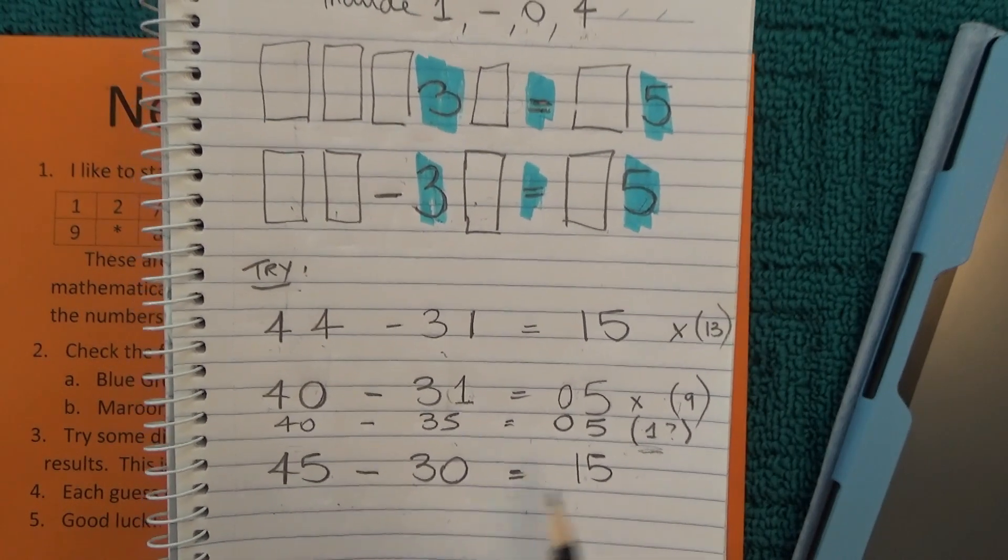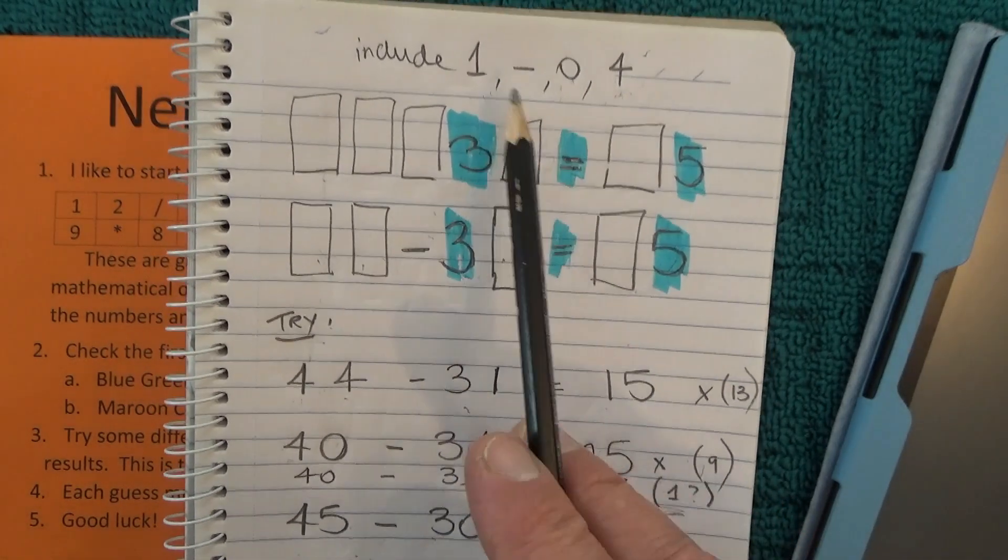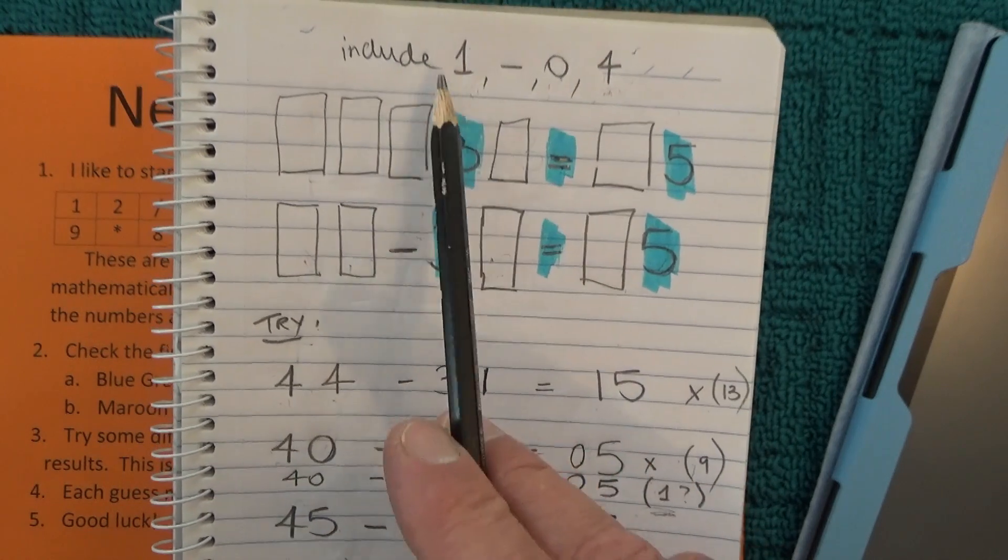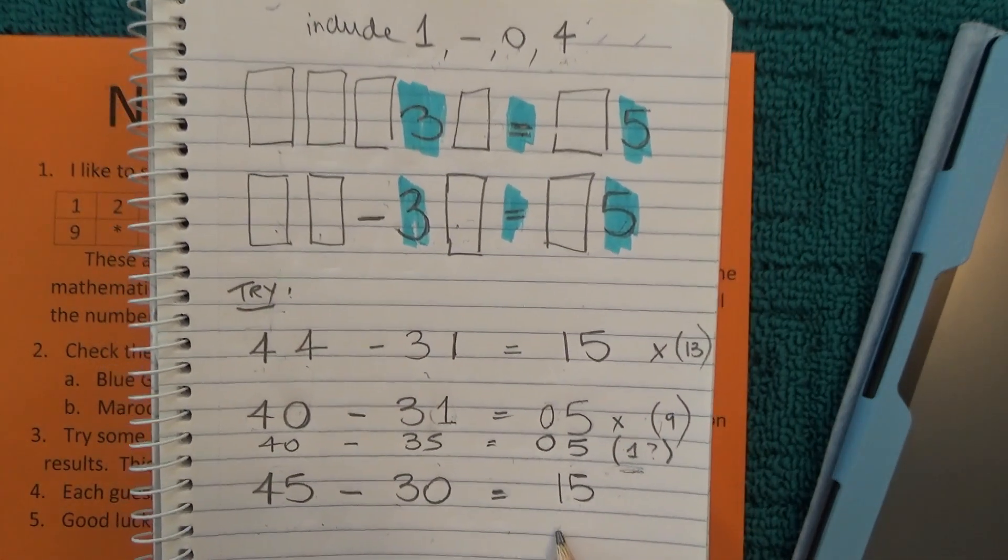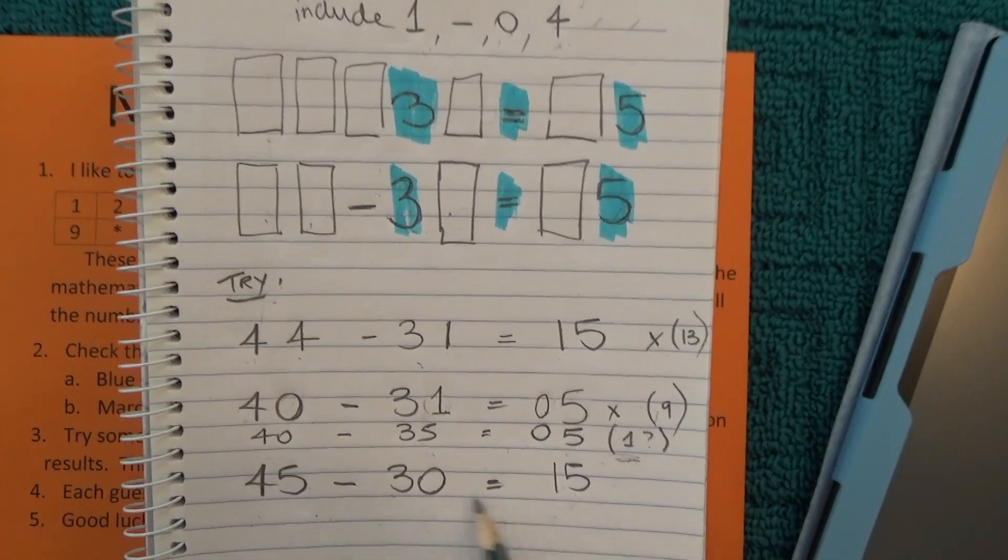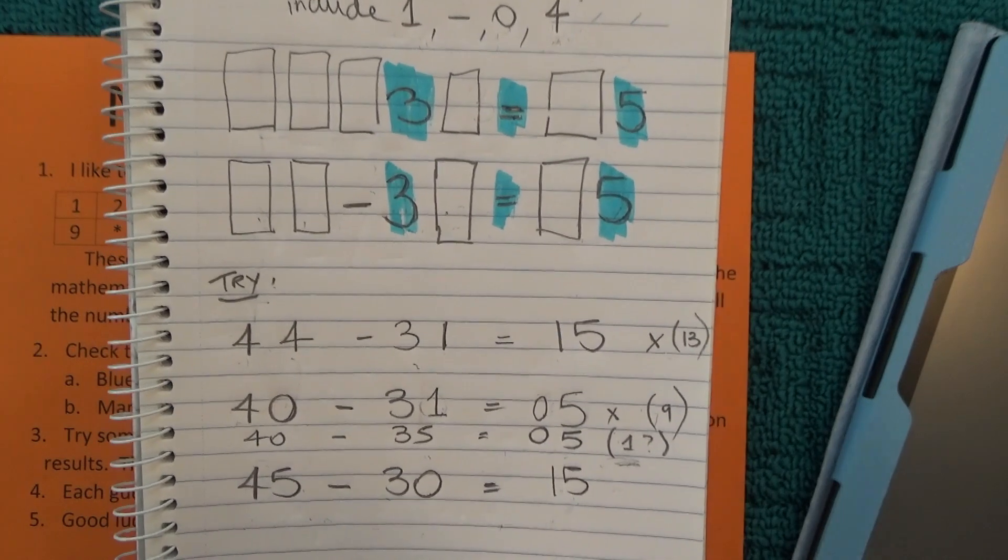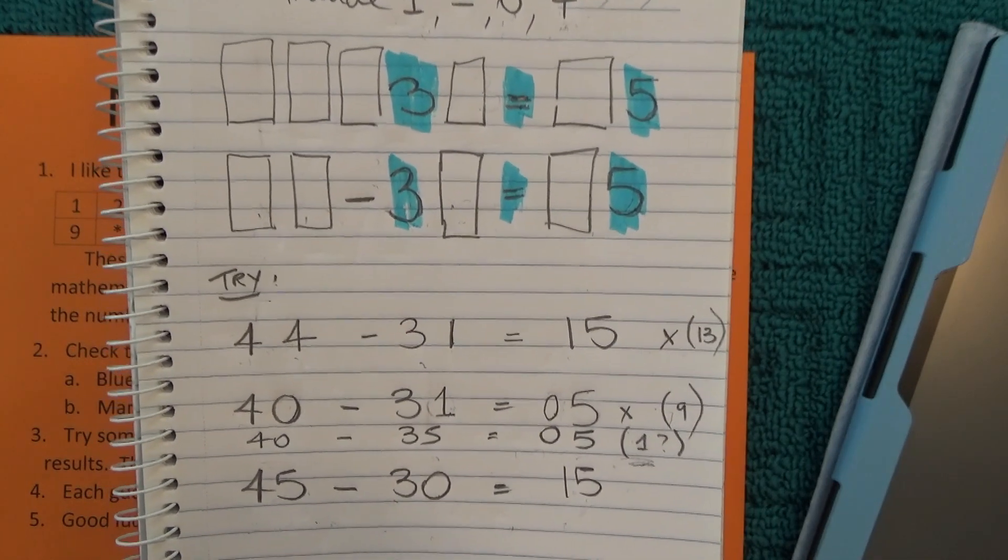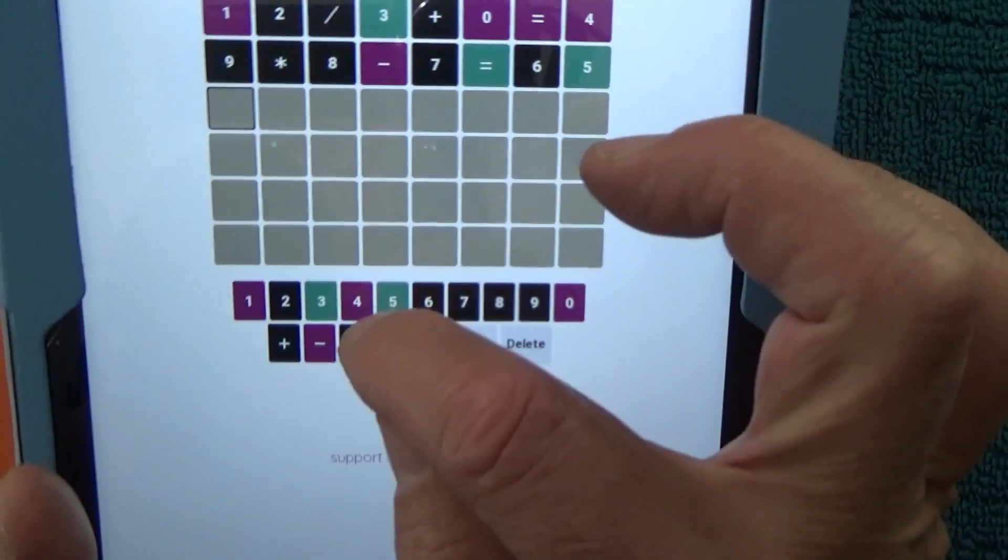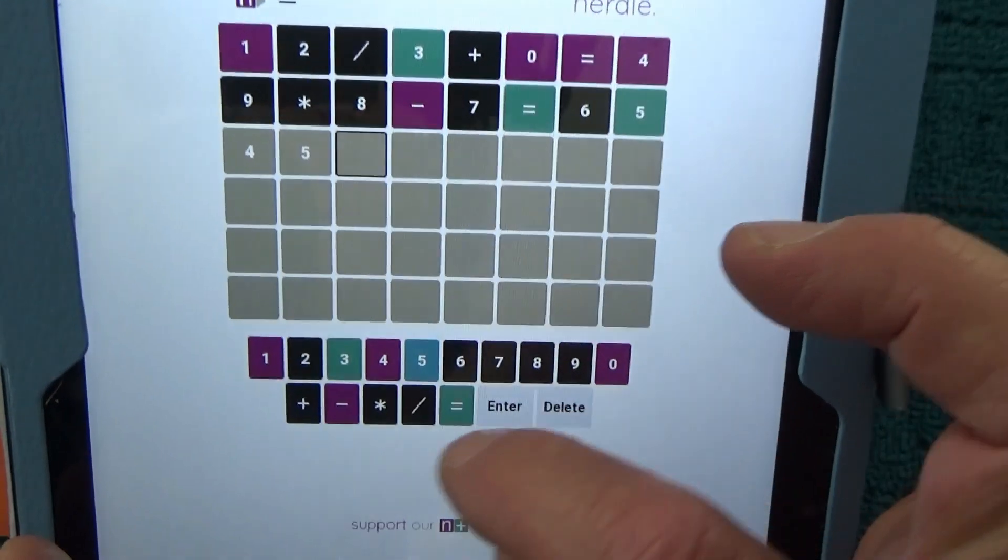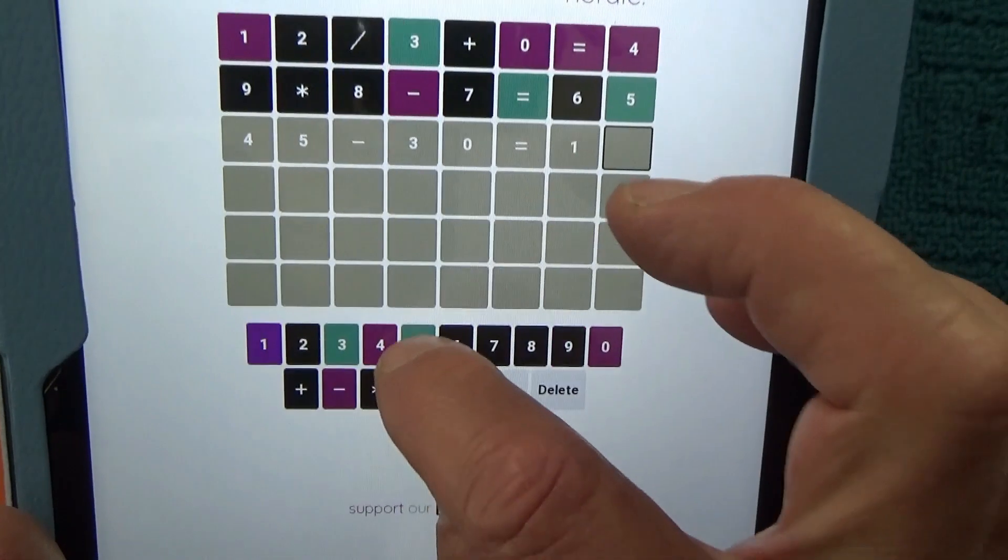That's actually a correct equation. And that uses all these numbers up here that I have to include, the 4, the 0, the 1, and of course the minus sign there. So that looks like it might be the answer. And that's the answer that I will plug in to Nerdle to see if it's correct. So that was 45 minus 30 equals 15,